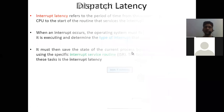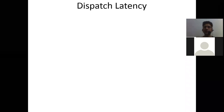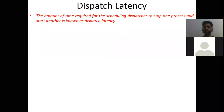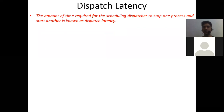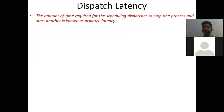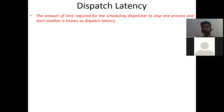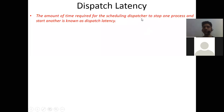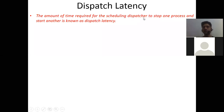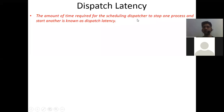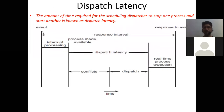The second type of latency is dispatch latency. Dispatch latency is the amount of time required for the scheduling dispatcher to stop one process and start another. The dispatcher must save the state of the process just preempted and load the state of the new process, handling all memory requirements. The total time taken for this activity is called dispatch latency.